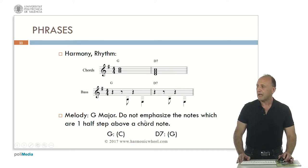For the melody as I explained we will use the notes from the G major scale. We do not have to emphasize the notes which are one half step above a chord note. For example on G major chord the note C is one half step above B. So we will not emphasize note C when we are on G major chord. In the same way on the D dominant 7th chord the note G is one half step above F sharp. So on this chord we will not emphasize the note G.